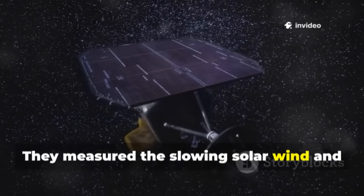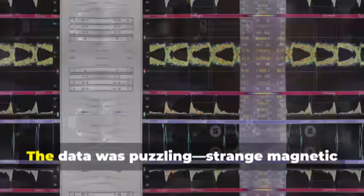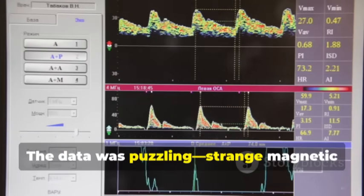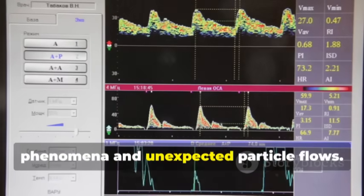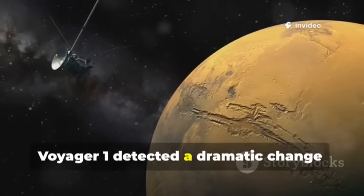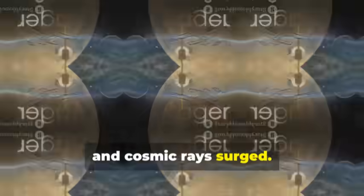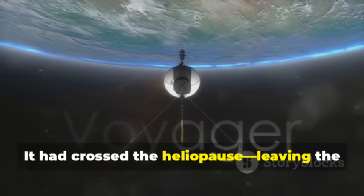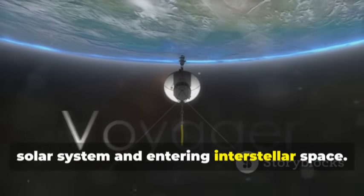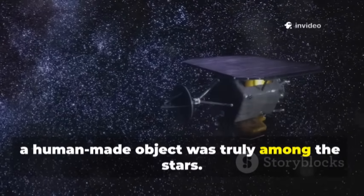They measured the slowing solar wind and rising cosmic pressure, sensing the approach of the boundary. The data was puzzling, strange magnetic phenomena and unexpected particle flows. Then in 2012, Voyager 1 detected a dramatic change, solar wind particles vanished, and cosmic rays surged. It had crossed the heliopause, leaving the solar system and entering interstellar space. For the first time, a human-made object was truly among the stars.